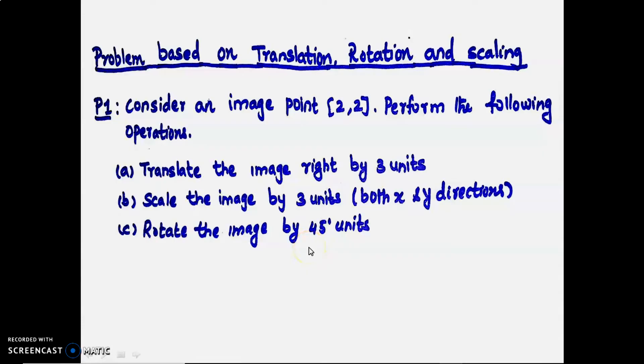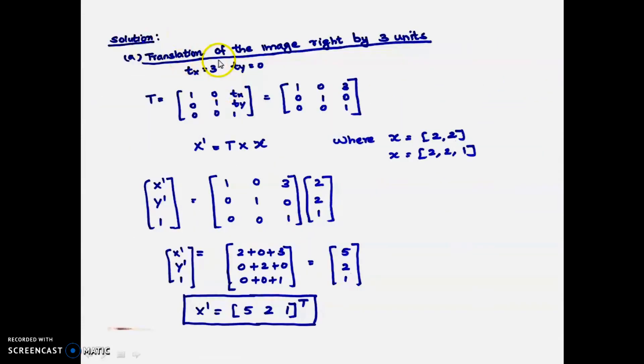We'll see the solution. Translate the image by 3 units to the right side, so right side means tx = 3, ty = 0. Why have we taken ty = 0? They didn't say any vertical movement, only right side, so tx = 3, ty = 0. This T is called the translation transformation matrix.